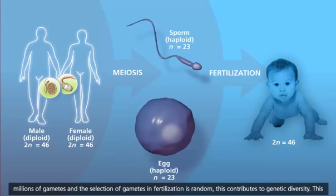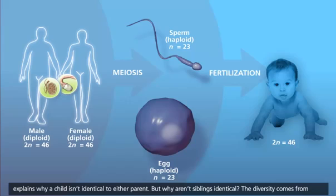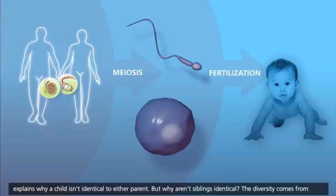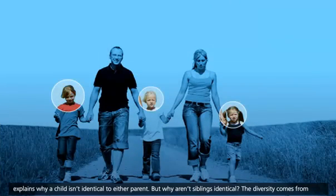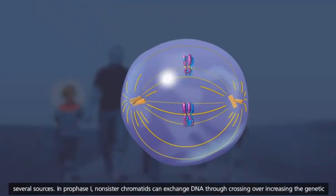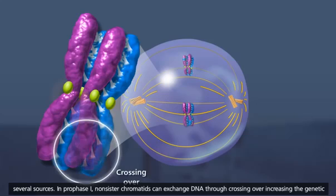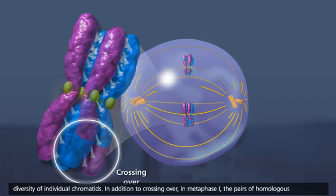Because men and women produce millions of gametes and the selection of gametes in fertilization is random, this contributes to genetic diversity. This explains why a child isn't identical to either parent. But why aren't siblings identical? The diversity comes from several sources. In prophase I, non-sister chromatids can exchange DNA through crossing over, increasing the genetic diversity of individual chromatids.